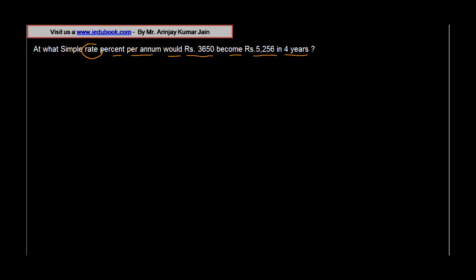At what simple rate percent per annum would Rs.3650 become Rs.5256 in 4 years? The question is asking us to calculate the rate at which 3650, the original amount, will become 5256 in a period of 4 years.